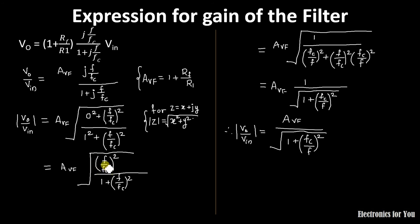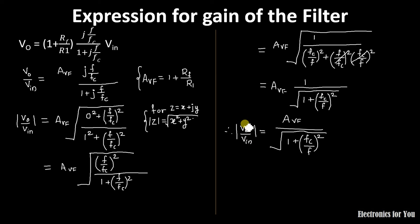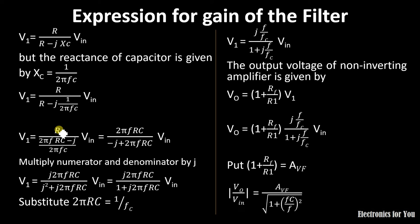To further simplify, we send F/FC to the denominator, making it FC/F. This term 1 becomes multiplied by (FC/F)², and the (F/FC)² terms cancel with their reciprocals. Since the square root of 1 is 1, we get the final gain expression: |V0/Vin| = AVF / √(1 + (FC/F)²). We will use this formula to calculate the frequency response for the high-pass filter.